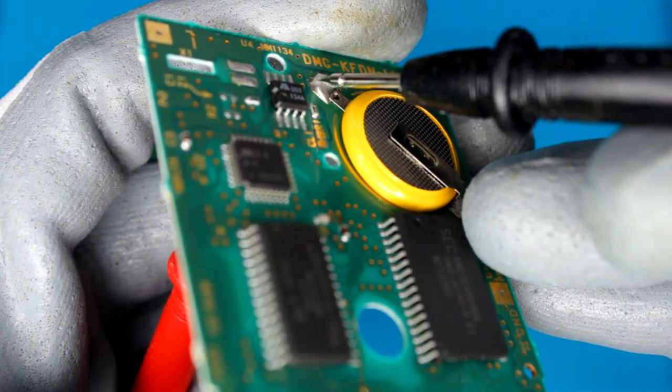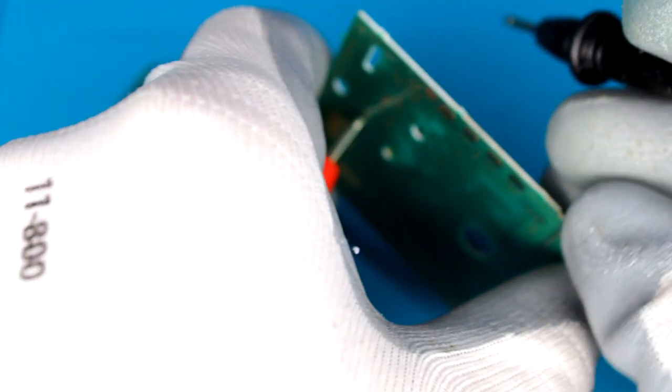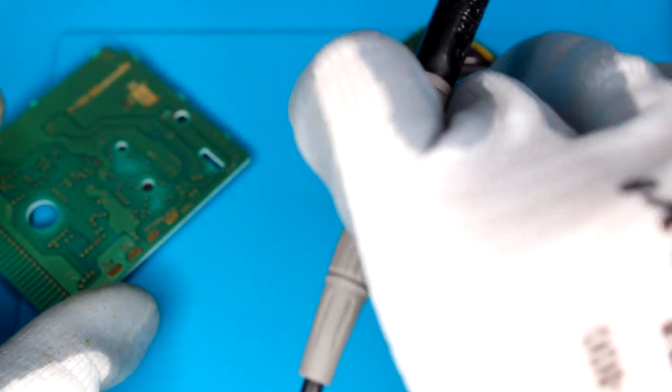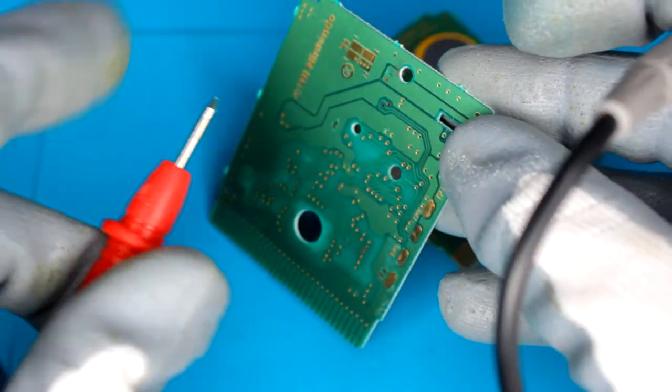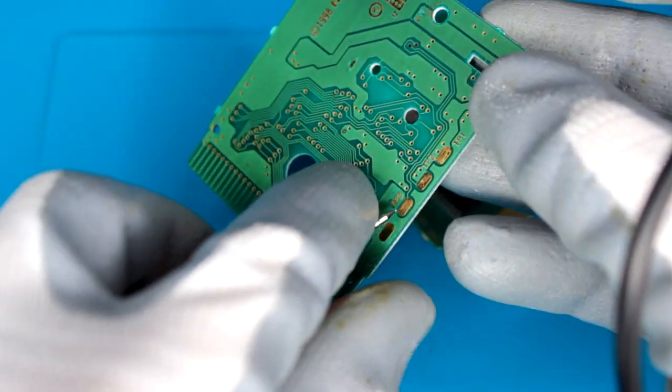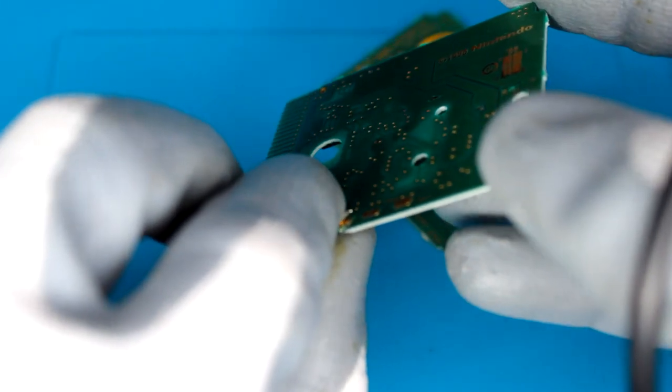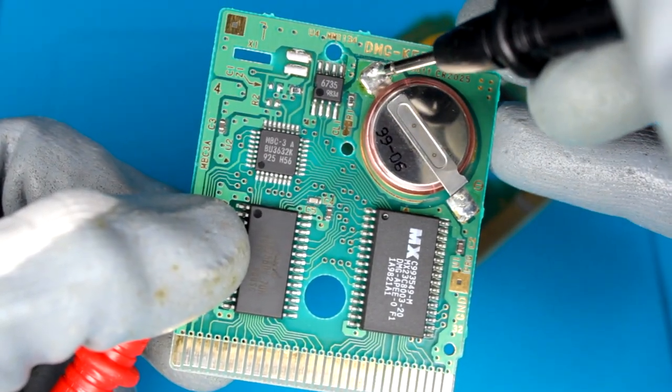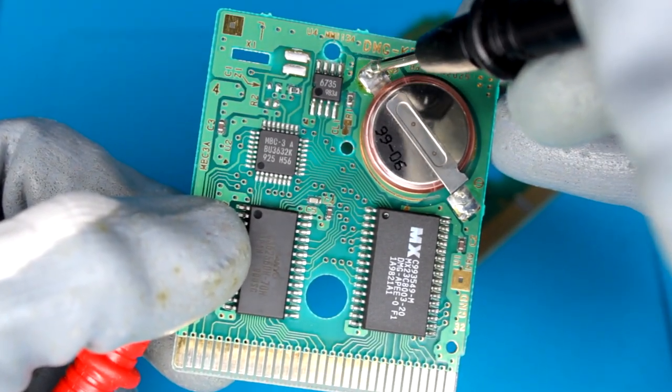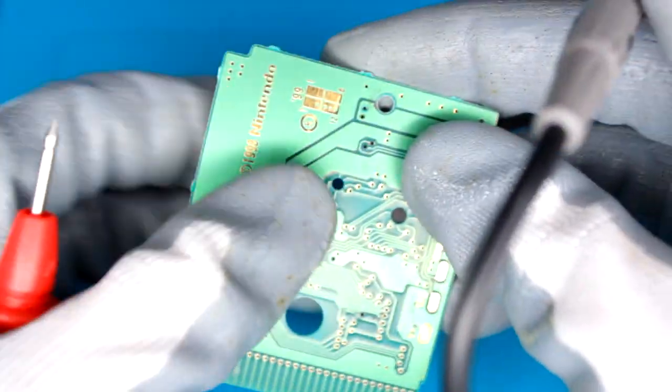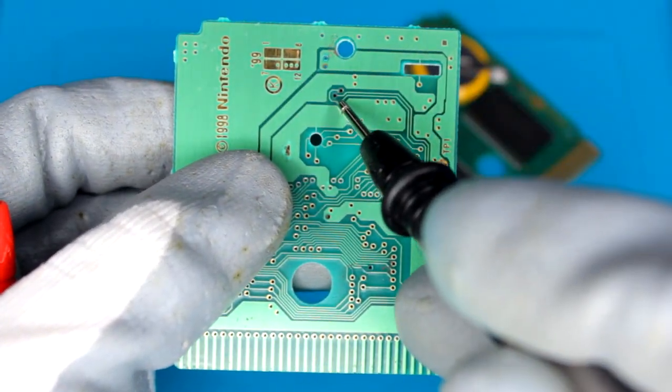Now I'm going to check where the second via goes, it seems to go to the battery positive. So checking on the broken board again, let's see if this test point goes to the battery positive or if this is also a faulty via. Which it is. So I'll be taking a note of that, so there'll be two wire mods so far for both of those vias.